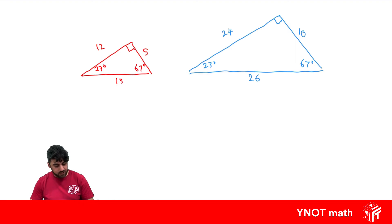So we have every corresponding angle equal to each other and every side being multiplied by the same number. And that number you can call a scale factor.